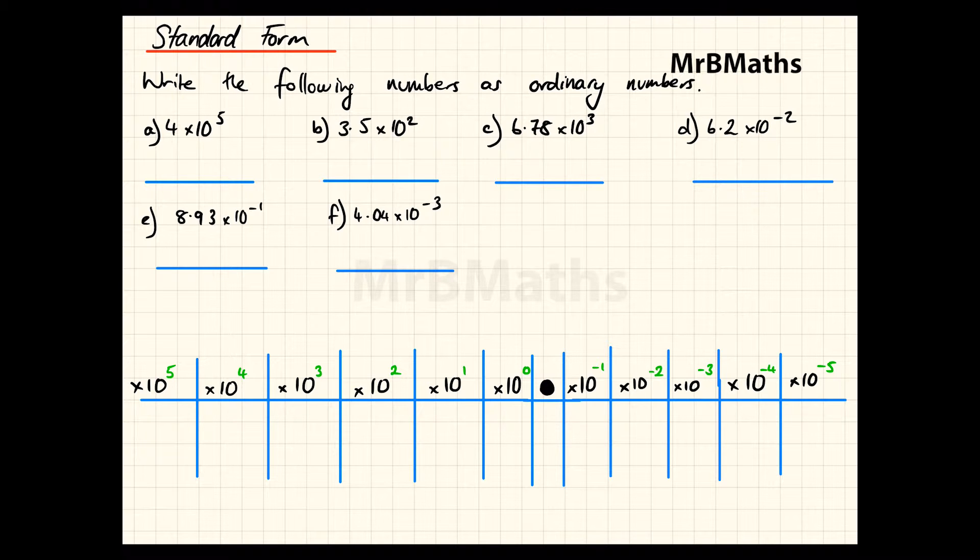What we need to do is change the following examples A through F from standard form into ordinary numbers. Remember, standard form is between one and less than ten, and it's always times ten to the something. If we start off with four times ten to the five, from the previous video you'll remember how we use this table here, so we're going to use this again. I need to find where ten to the five is, which is right here.